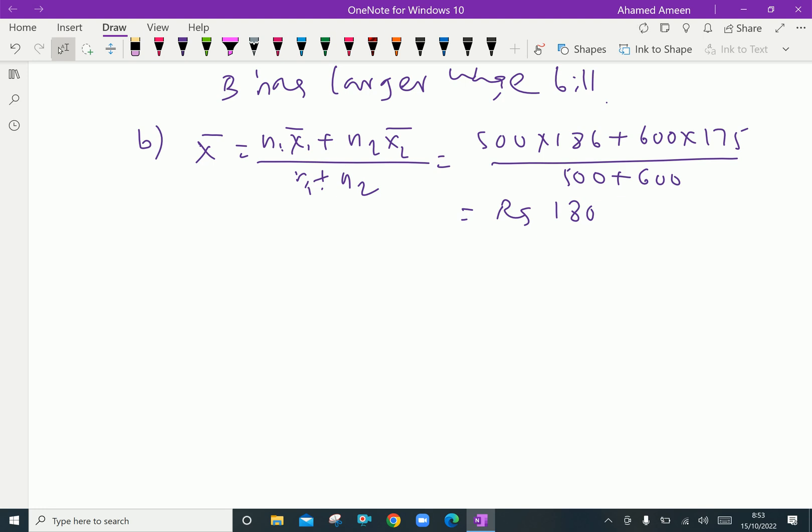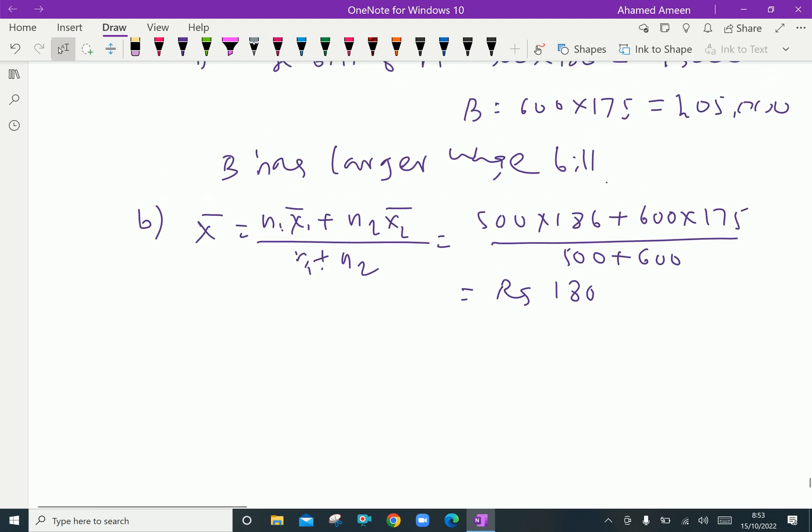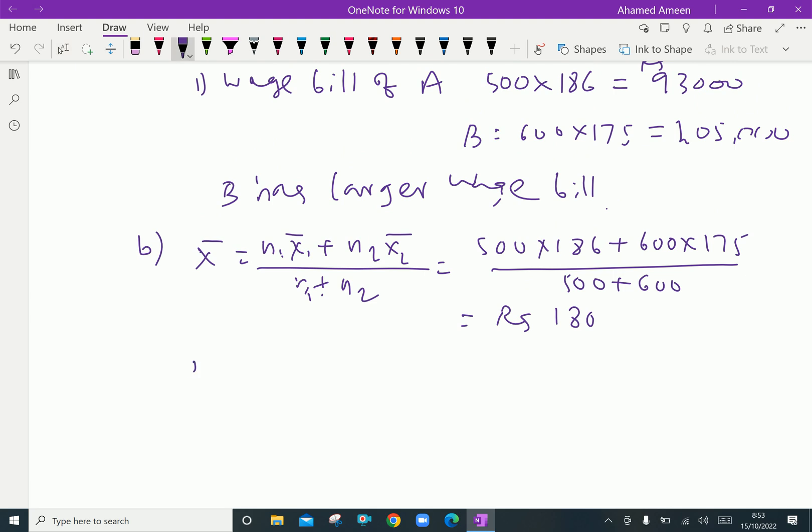Third question: variance of the distribution. The combined variance σ² equals [1 / (N1 + N2)] × [N1(σ1² + D1²) + N2(σ2² + D2²)]. We have to calculate D first.